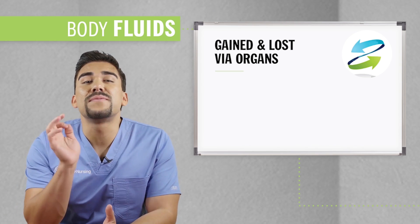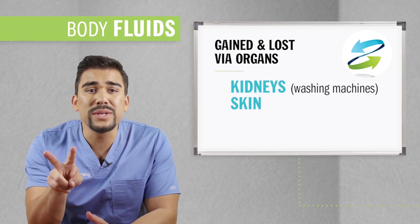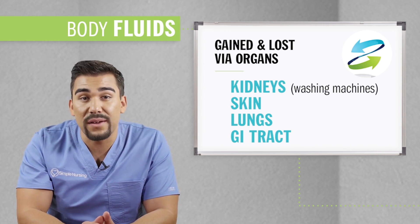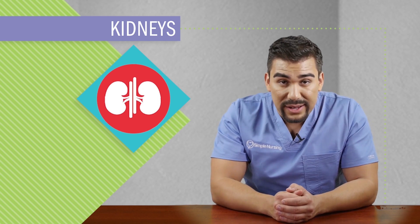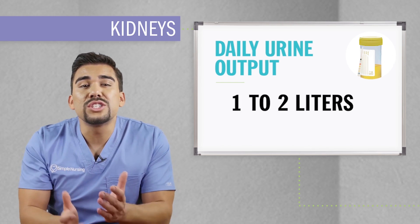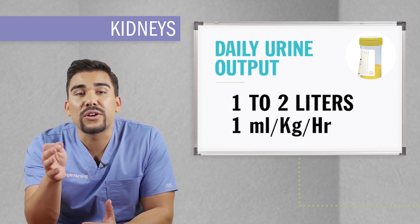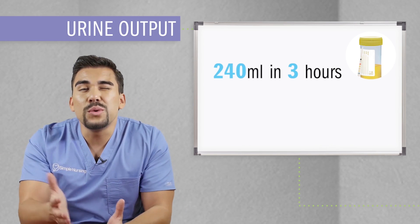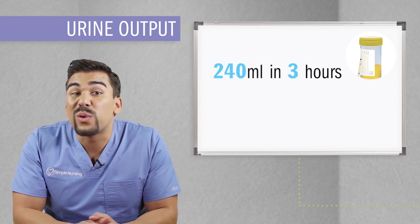Fluids are gained and lost via a few main organs. Number one is the kidneys, which I call the washing machines. Number two is the skin, then the lungs, and lastly the GI tract. The kidneys serve as the doors of the body that let fluid out into the urine. Normal daily urine output is 1 to 2 liters in a healthy adult — technically 1 mL per kilogram of body weight per hour, or about 240 mL of urine in 3 hours, basically 8 ounces or 1 cup of urine in 3 hours.